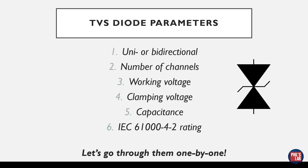When choosing TVS diodes we need to be concerned with several main parameters. First, there's uni- or bi-directional — on the right you can see the symbol for a bi-directional TVS diode. Then we need to choose the number of channels, the working voltage, clamping voltage, capacitance, and some sort of IEC rating, which is a robustness rating. Let's go through them one by one.